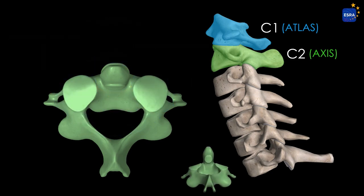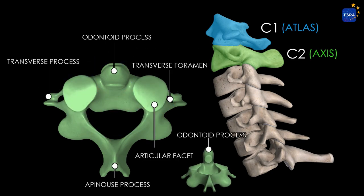The C2 vertebra, axis, is specialized for head rotation. Its most distinctive feature is the odontoid process, dens, a vertical projection arising from the vertebral body. This structure acts as a pivot around which the atlas rotates, enabling the head to turn side to side, as in the motion of shaking no. Unlike the atlas, the axis has a well-defined vertebral body and spinous process, and is stabilized at its articulation with C1 by strong ligaments that secure the dens.